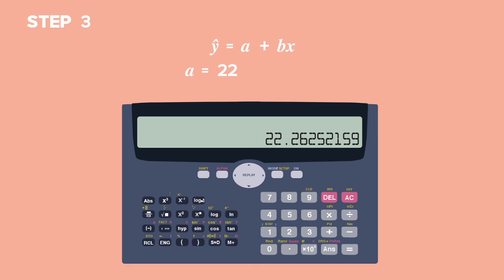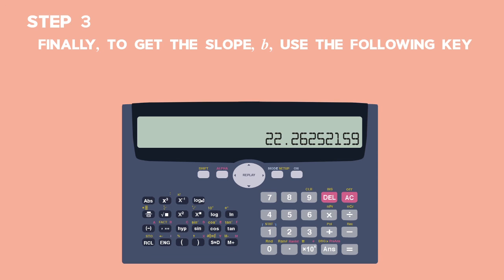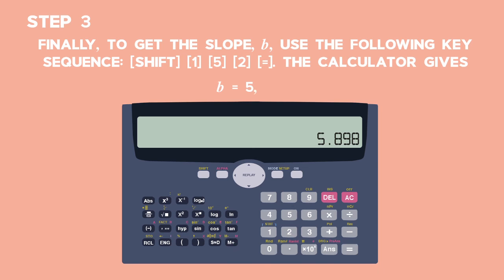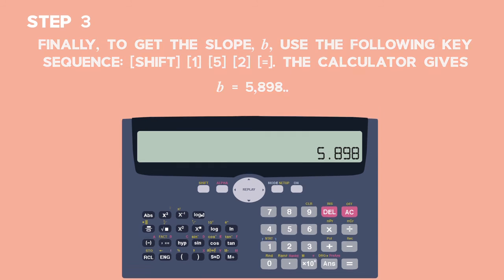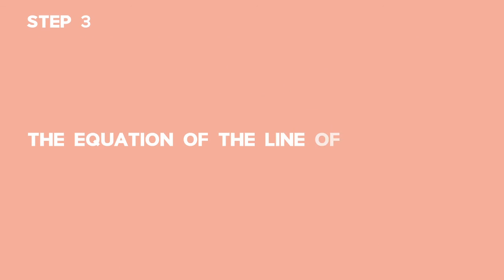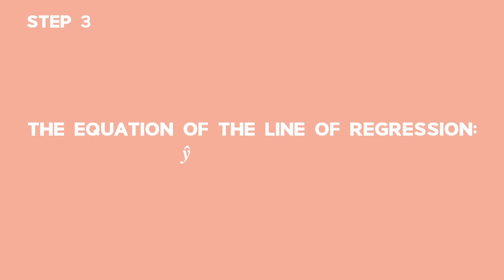And that's equal to 22.262 and so on. Finally, to get the slope B, use the following key sequence. Shift, 1, 5, 2 and equals. The calculator gives B equals 5.9 rounding up to one decimal place. The equation of the line of regression is thus Y hat equals 5.9 X plus 22.3. Practice using your calculator to find the equation in the line of regression.